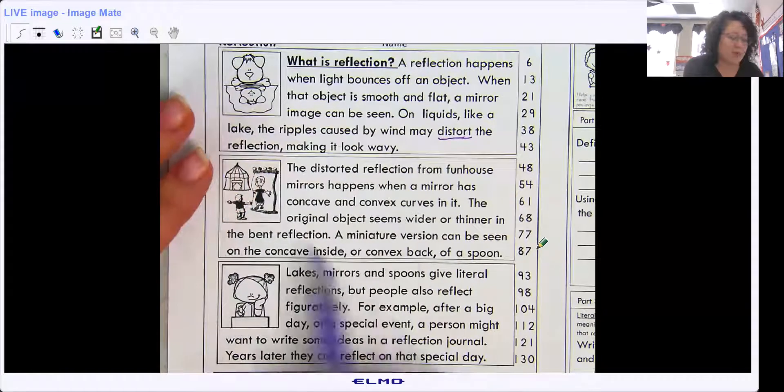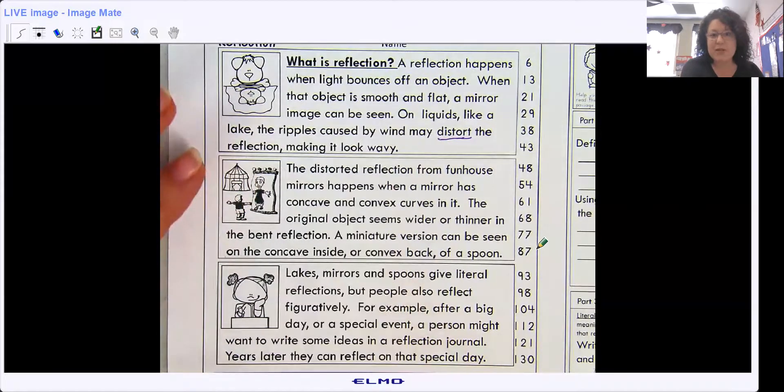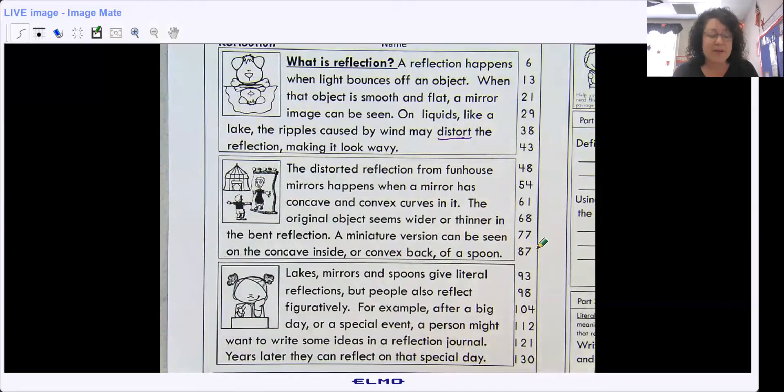The distort. So you'll have to reread that sentence, just like when we do vocabulary, what are the clues that help us figure that out. The distorted reflection from funhouse mirrors happens when a mirror has concave and convex curves. The original object seems wider or thinner in the bent reflection.